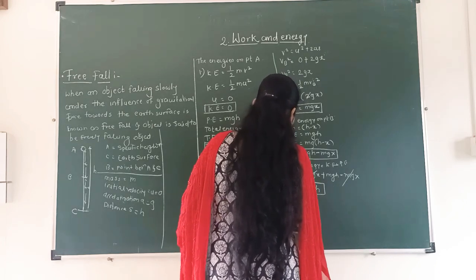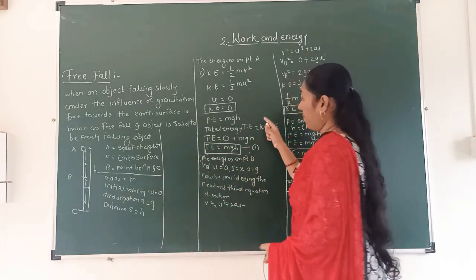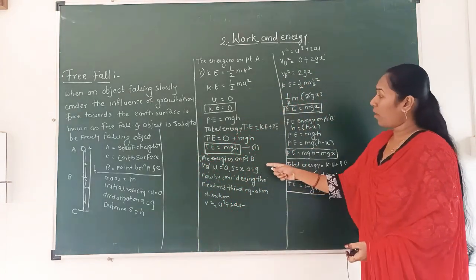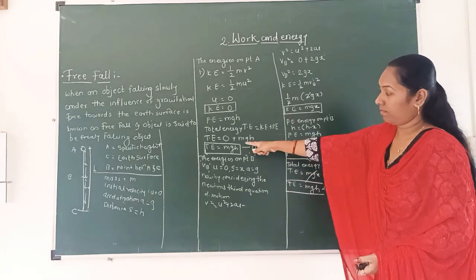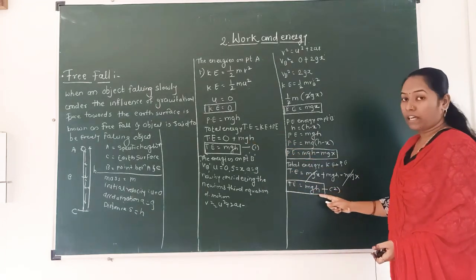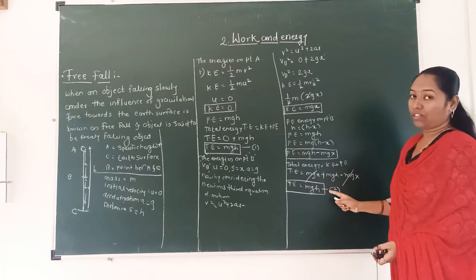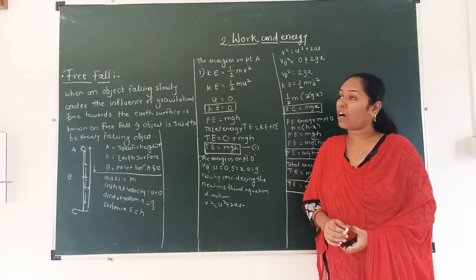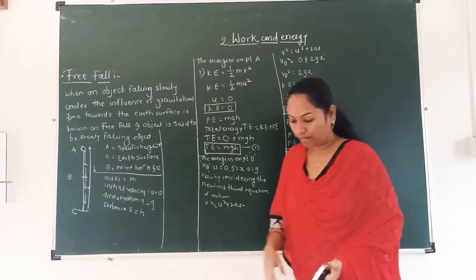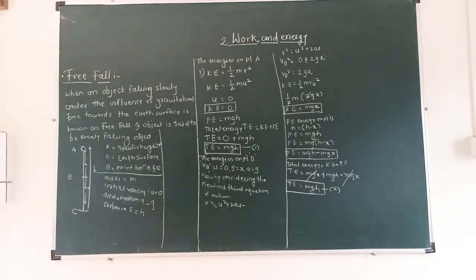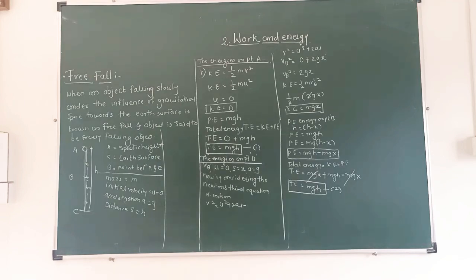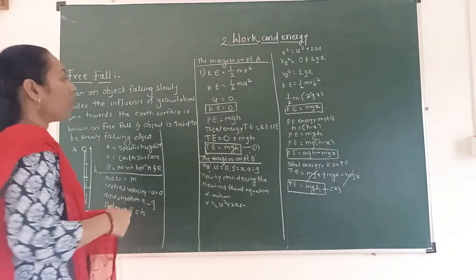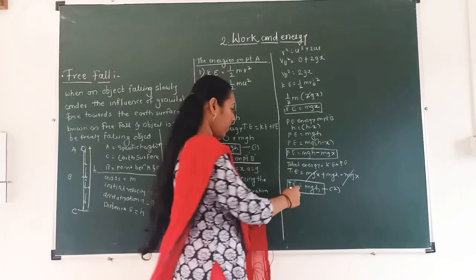The total energy at point A is MGH and the total energy at point B is also MGH. Now we are going to calculate the total energy at point C.